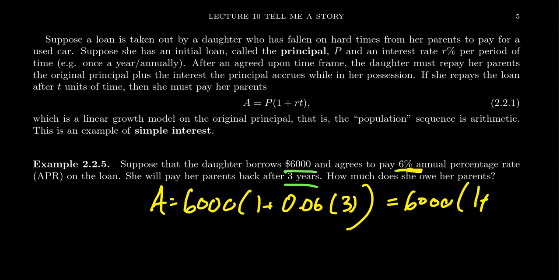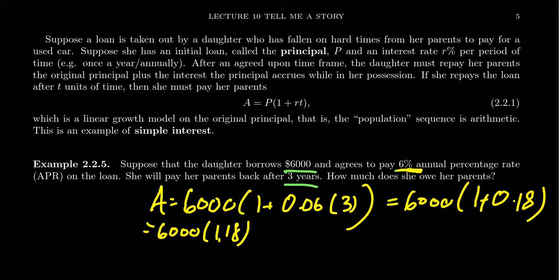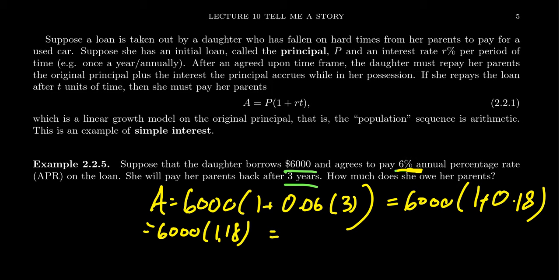We're going to first do 6% times three. That's going to have the effect of 18%. So taking three years to pay back 6% per year is the same thing as having 18% interest rate. You add that together, you get 1.18 here and then multiply that by 6,000. That gives us $7,080. That's how much the daughter would have to pay back her parents after three years.